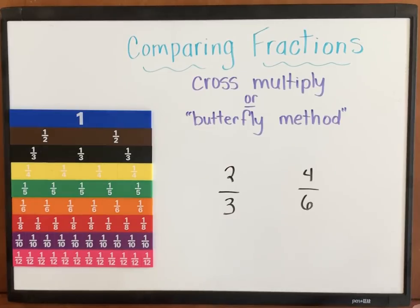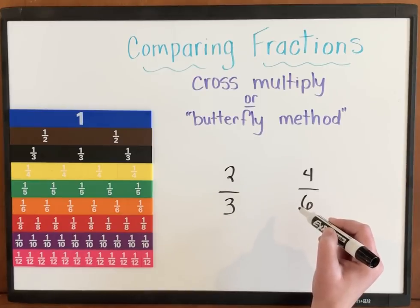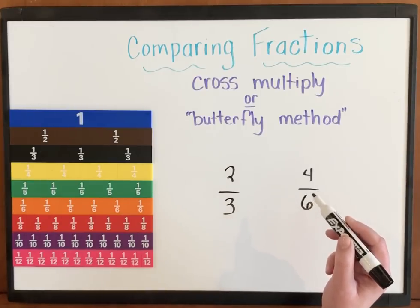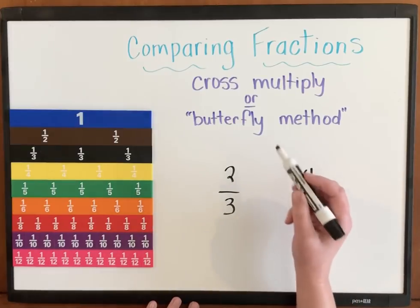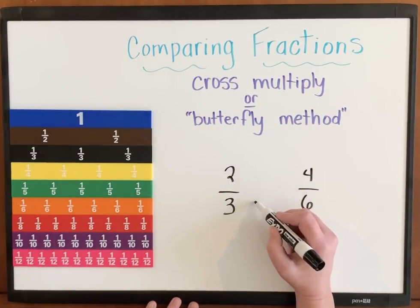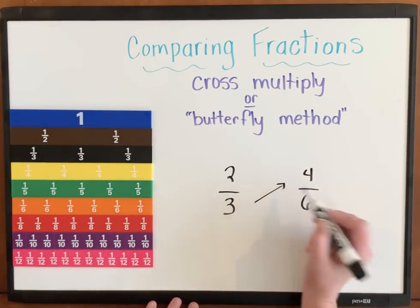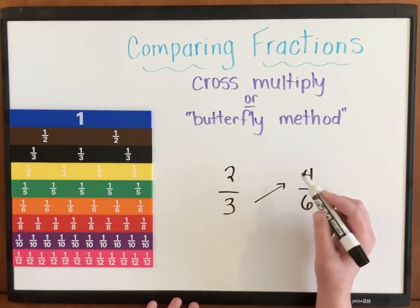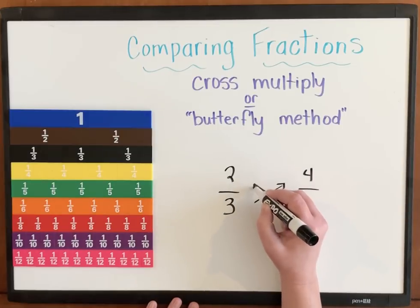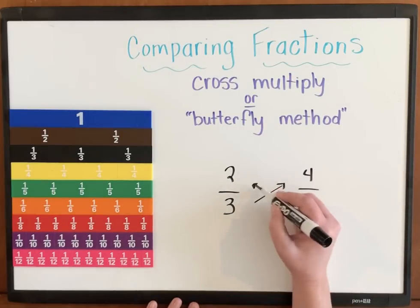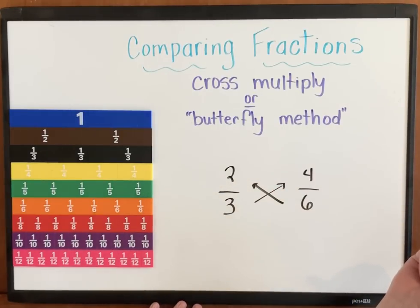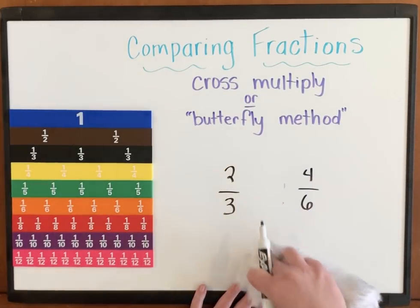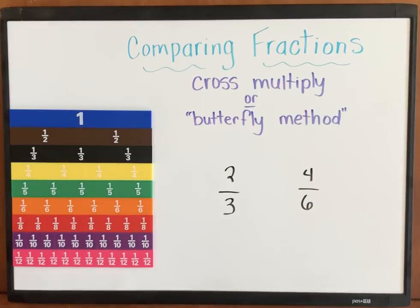Sometimes it's hard for kids to keep track of where they're cross multiplying. And so one way to do that is to circle your numbers that you're multiplying. And cross multiply means just this. You are multiplying this bottom number to this top number and then this bottom number to this top number. That's where it gets the word, the term cross multiply.